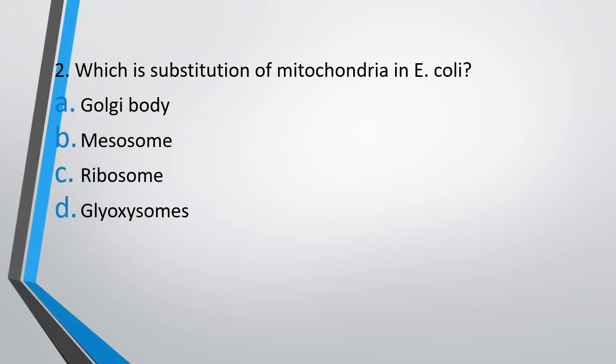Question 2: Which is the substitution of mitochondria in E. coli? Options: Golgi bodies, mesosomes, ribosomes, or glyoxysomes? The correct answer is Option B, i.e., mesosomes.